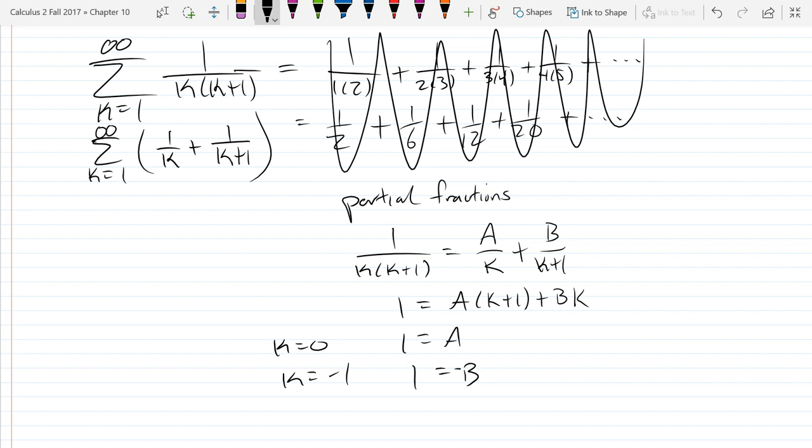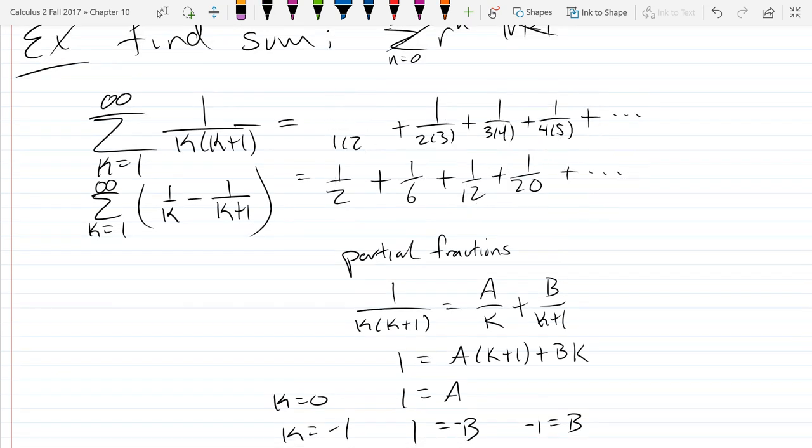b is negative 1, not positive 1. Negative b equals 1, so negative 1 equals b. All right, any partial fractions questions?